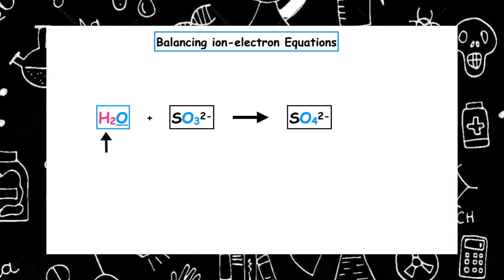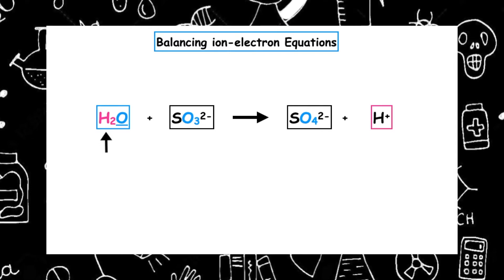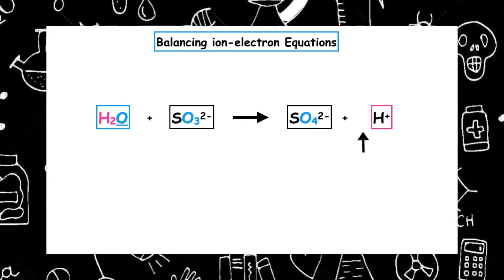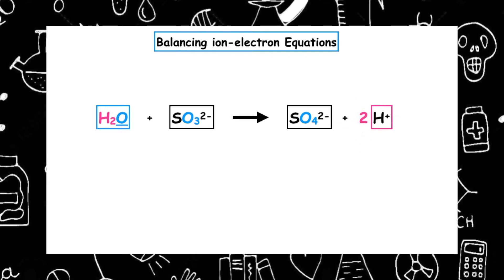However, we've introduced the element hydrogen in the form of a water molecule. So to balance this out, we have to add hydrogen ions to the right-hand side. In the water we've got two hydrogen atoms, so therefore we have to have two hydrogen ions to balance those out.